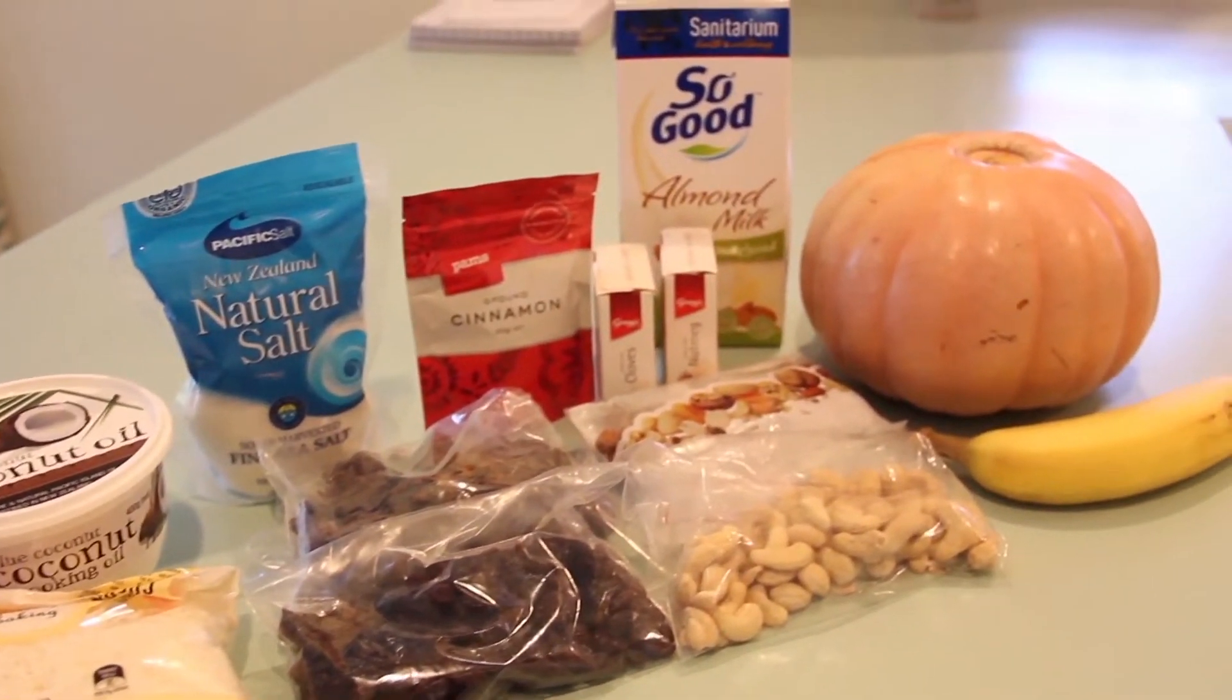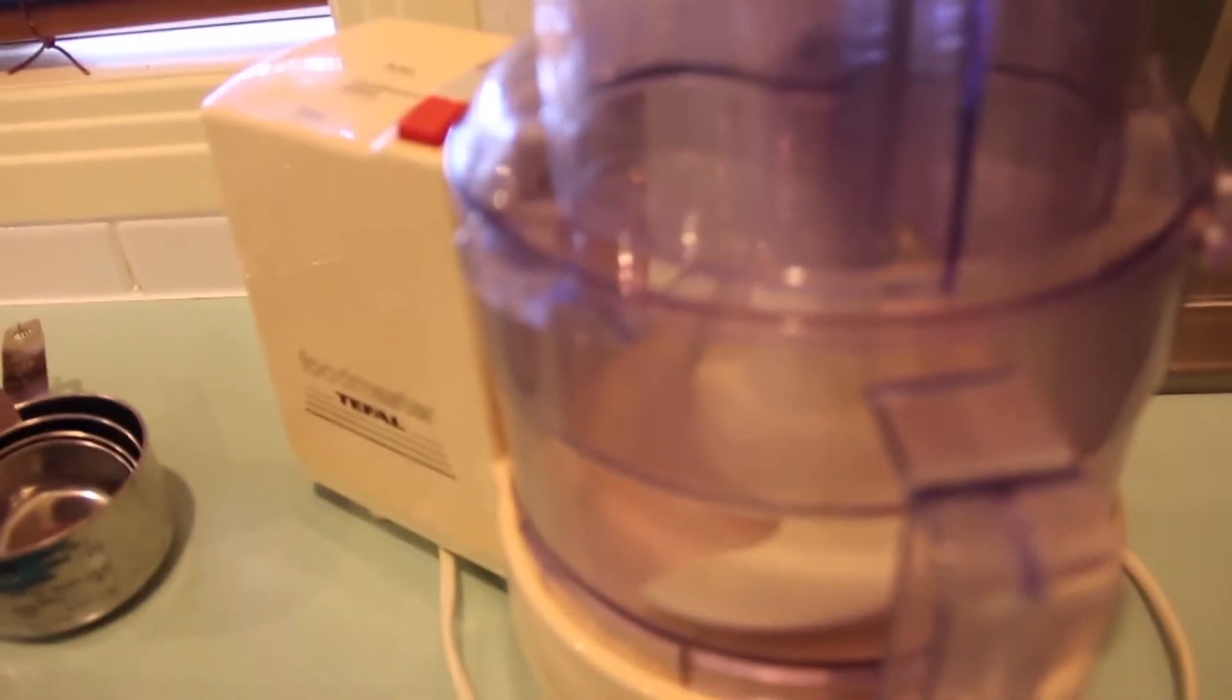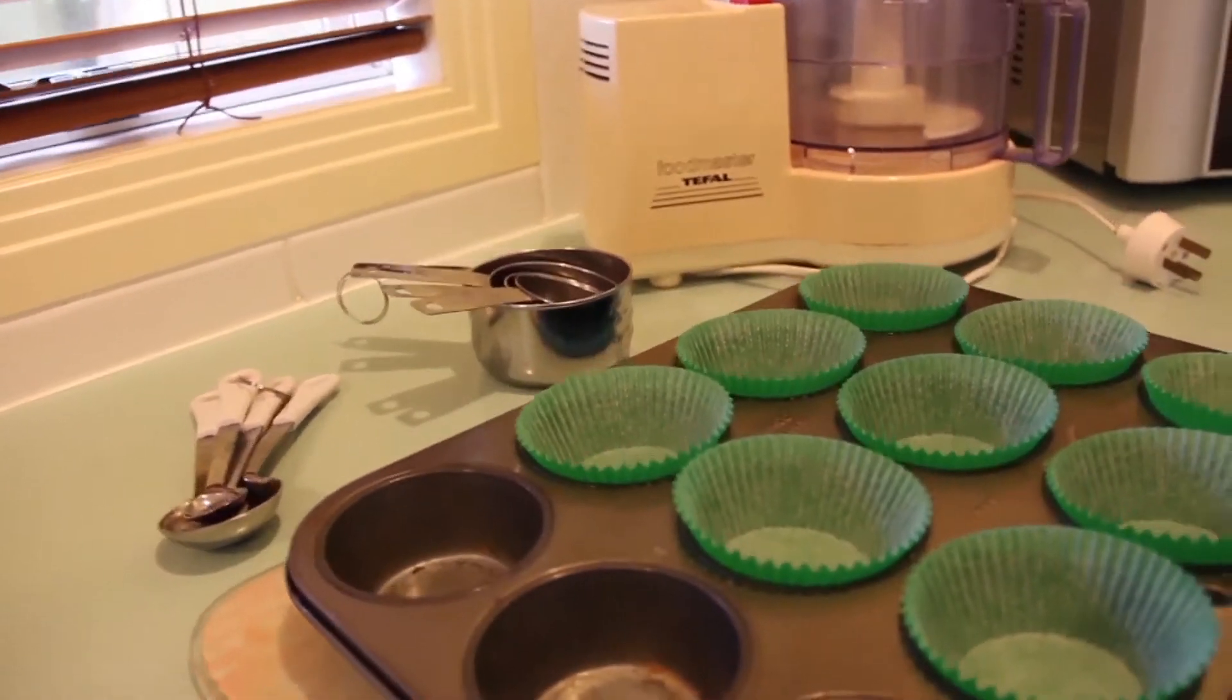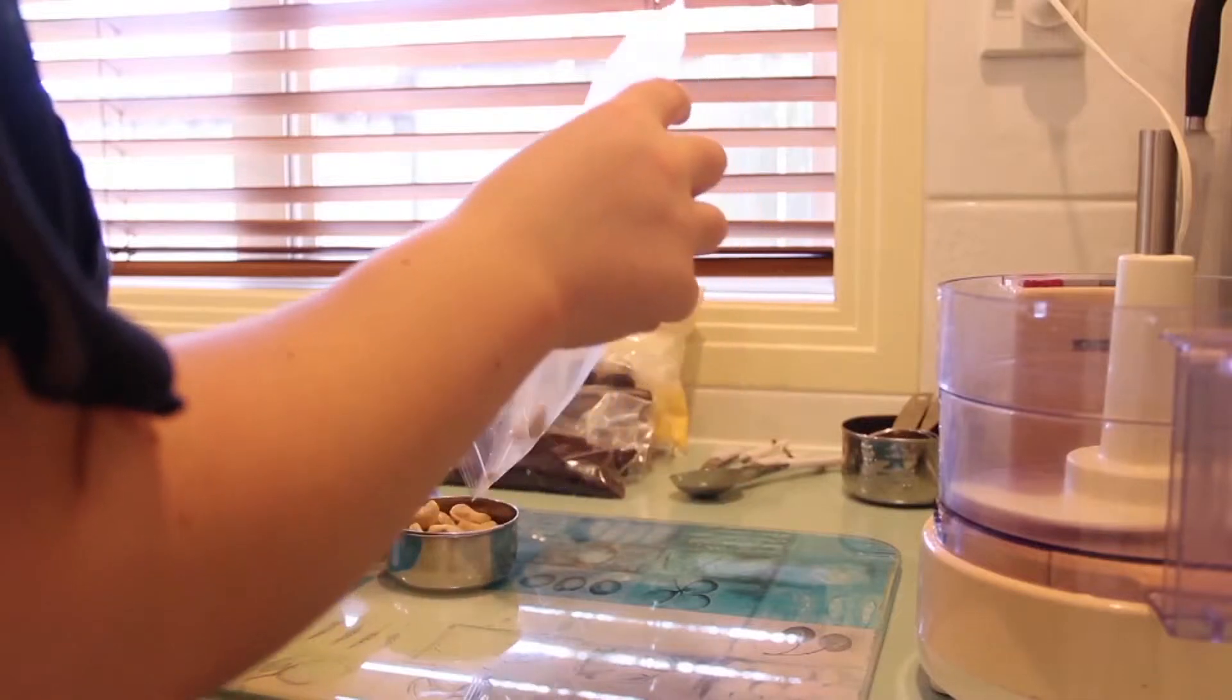To make this you're gonna need 13 ingredients, a food processor, something to put your pumpkin pie in, and measuring stuff.